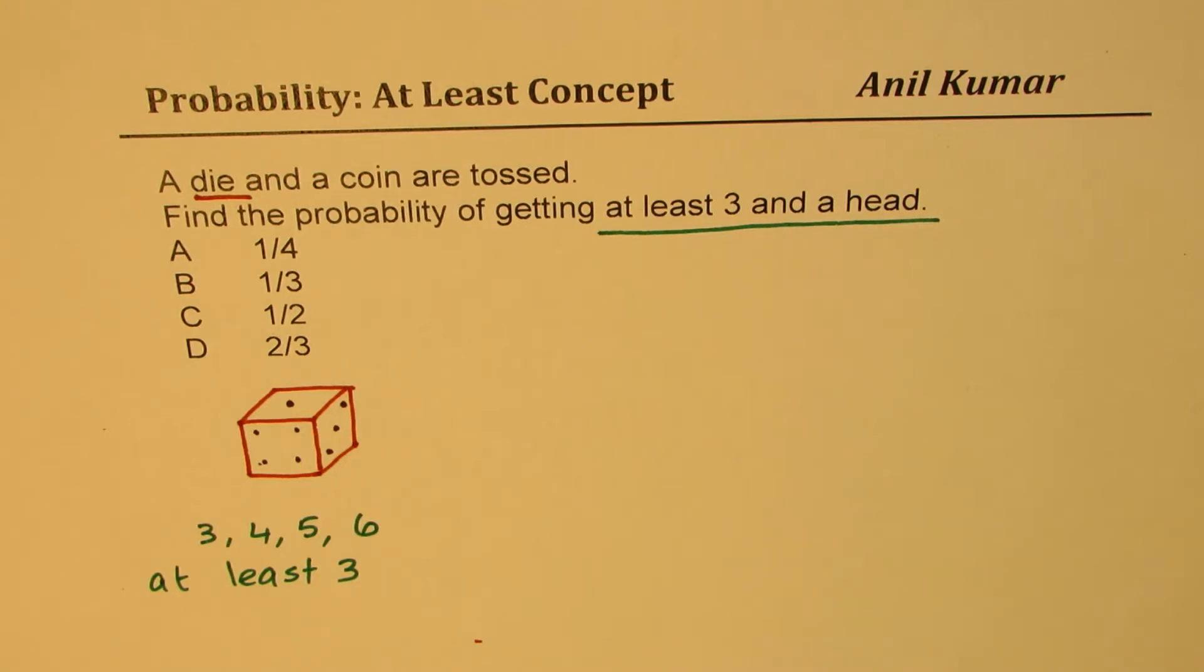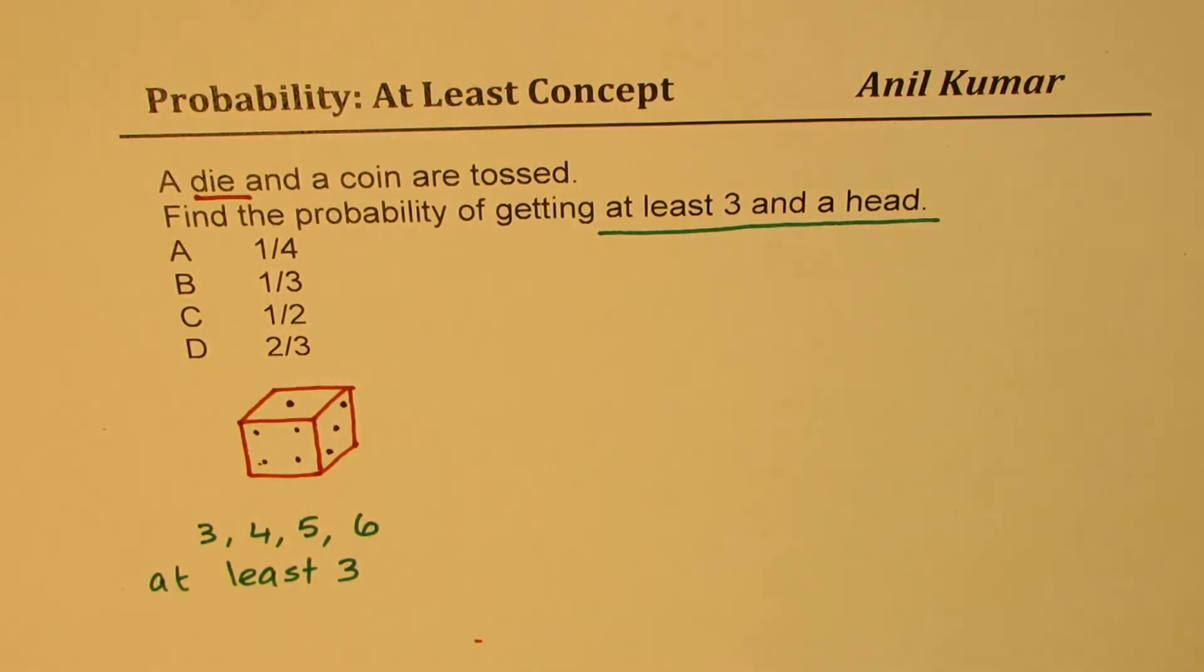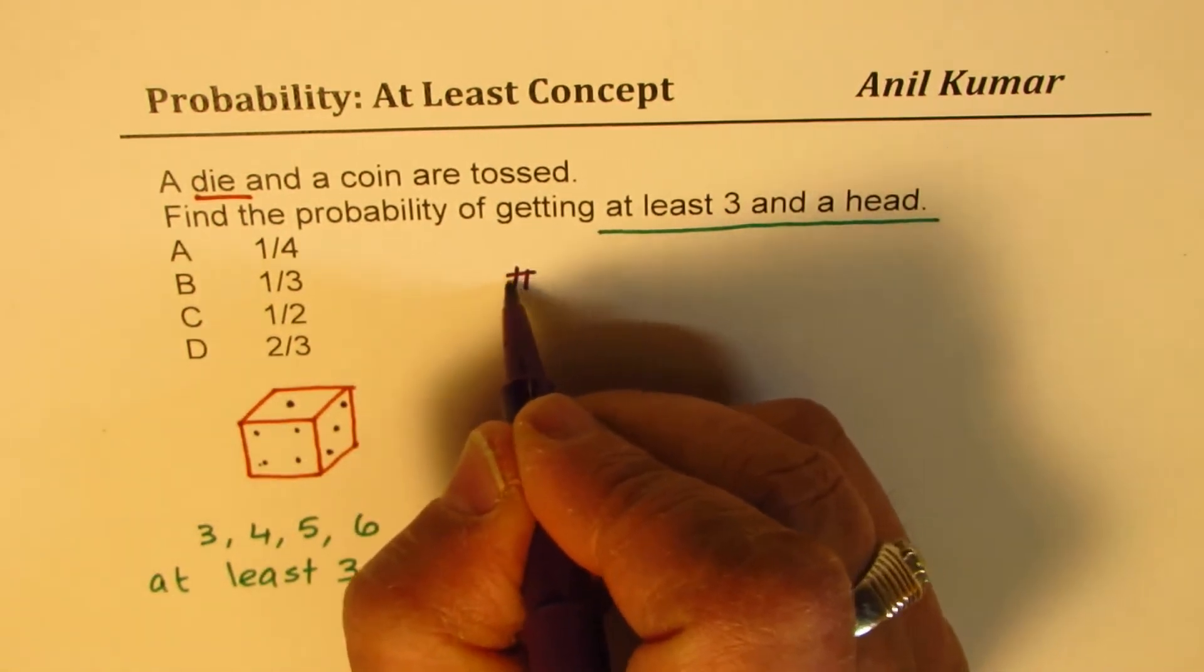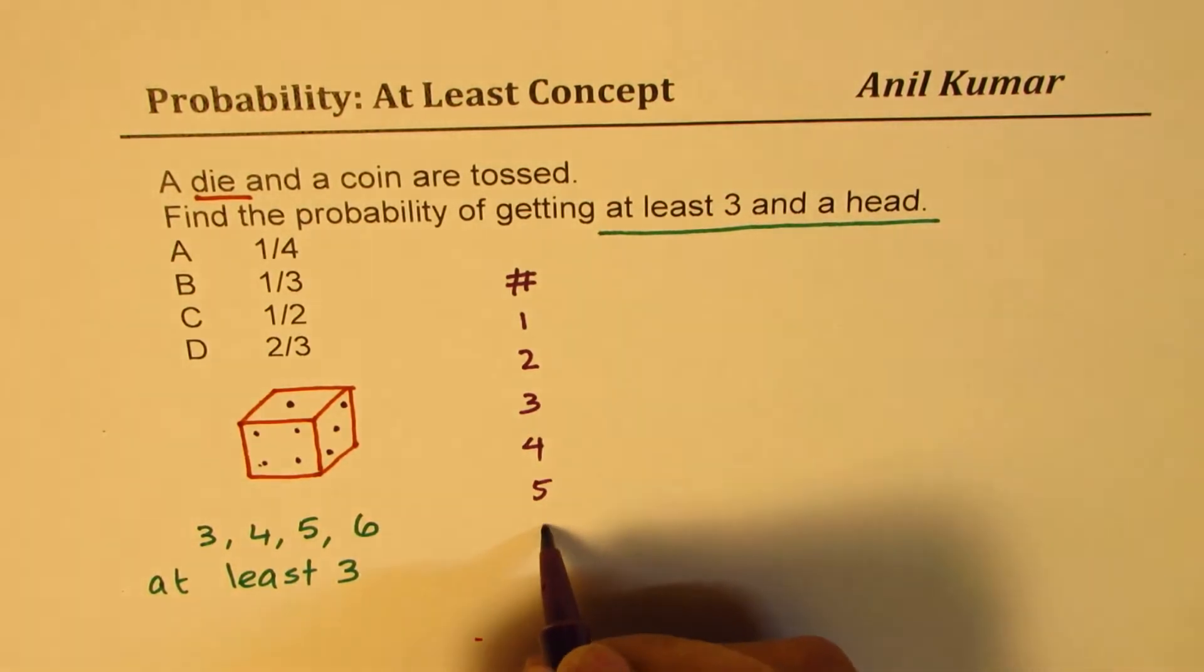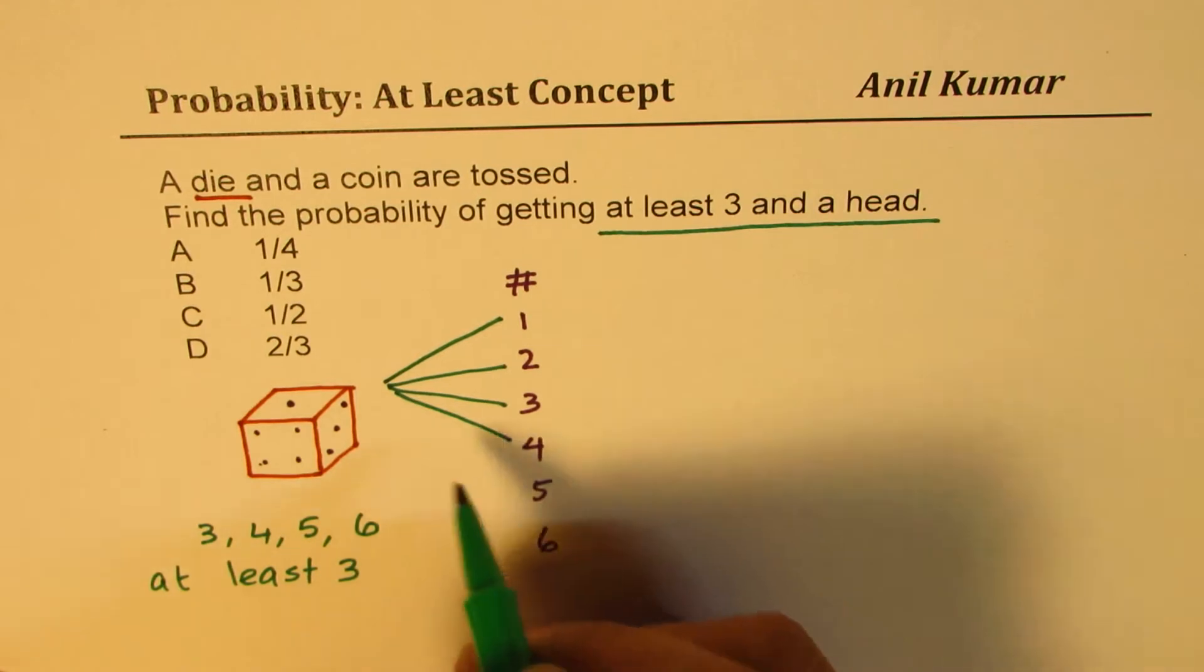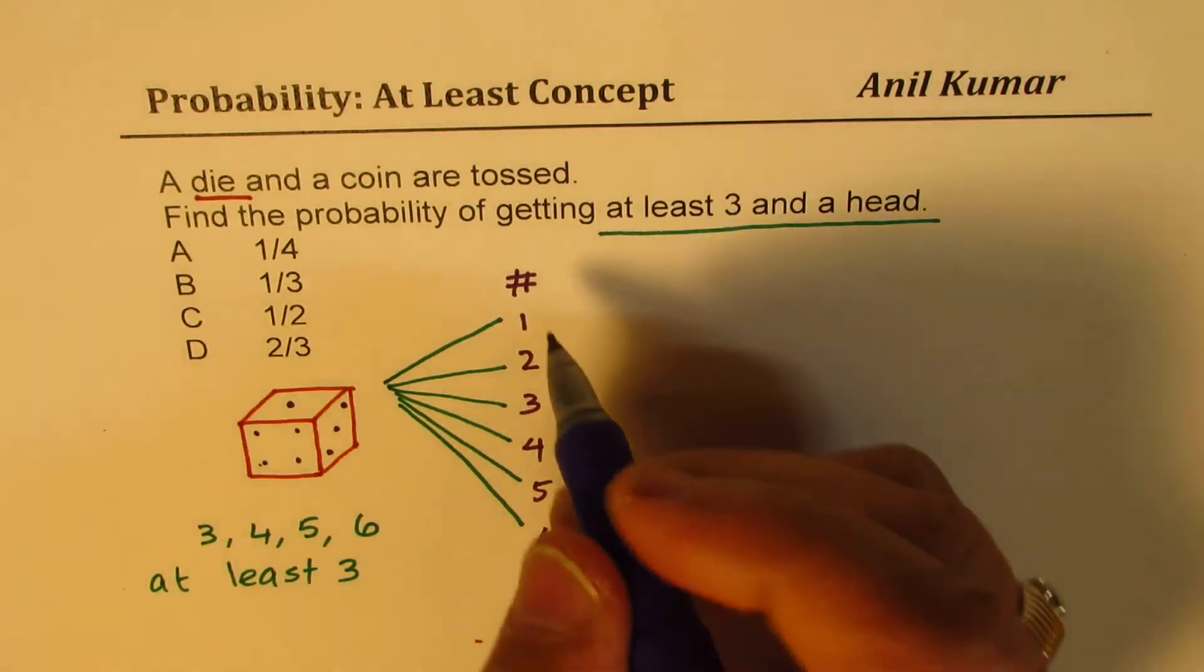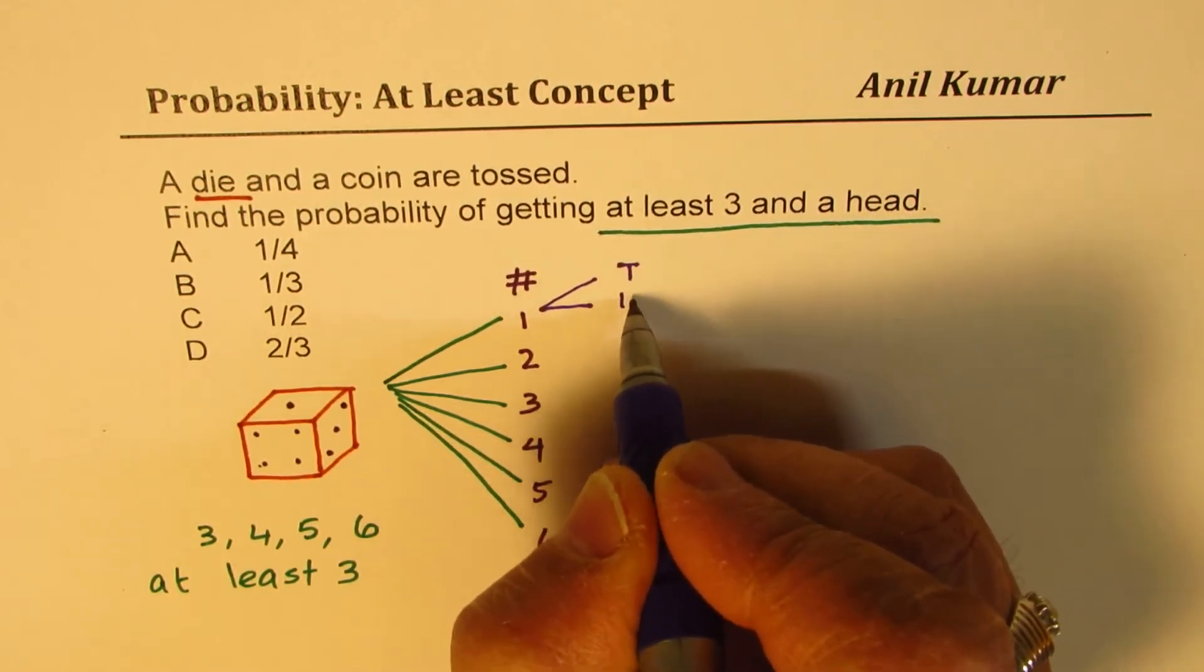There are many ways to go about this. Let us make a tree diagram to get to the solution. The possibility for the numbers is we could get one, two, three, four, five, or six. These are the possible numbers which you could get from the given dice. And for each combination you could either get a head or a tail.